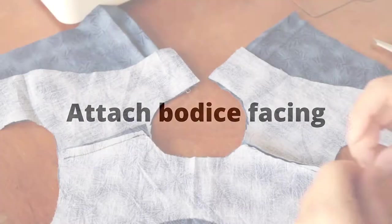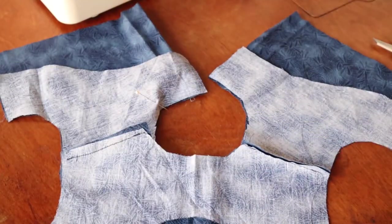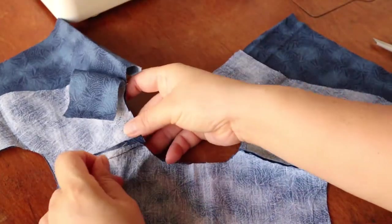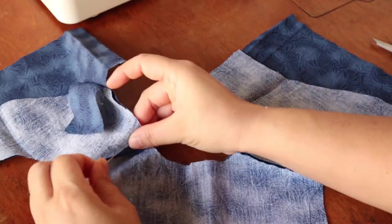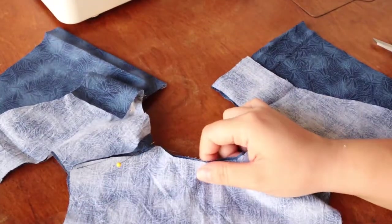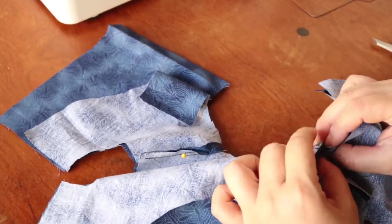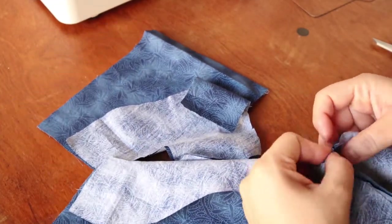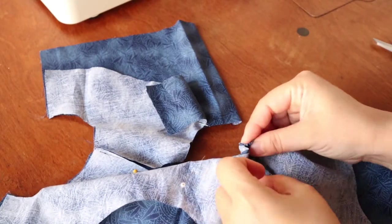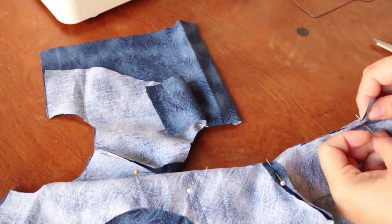Now we can attach the facing for the bodice. And we're pressing open the seam so it sits nicely. Notice I do not have these particular ones finished because the facing will finish the bodice itself when you evert or turn it right side out. So don't worry about that.